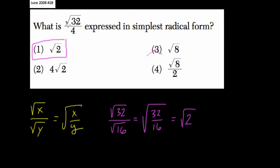another way to think about it is to break apart the square root of 32 into its perfect square factors. So the square root of 32, we know, is equal to 16 times 2. So this equals the square root of 16 times the square root of 2.